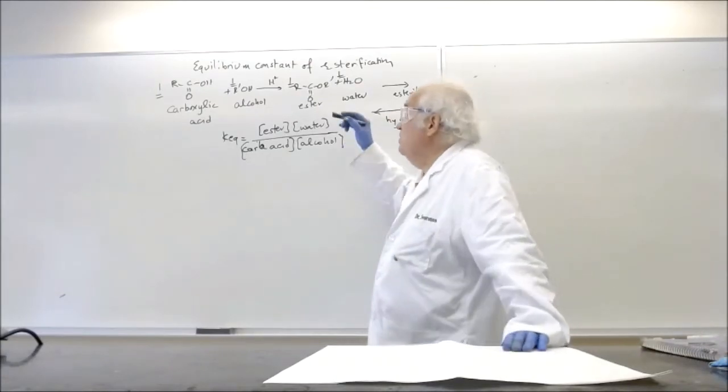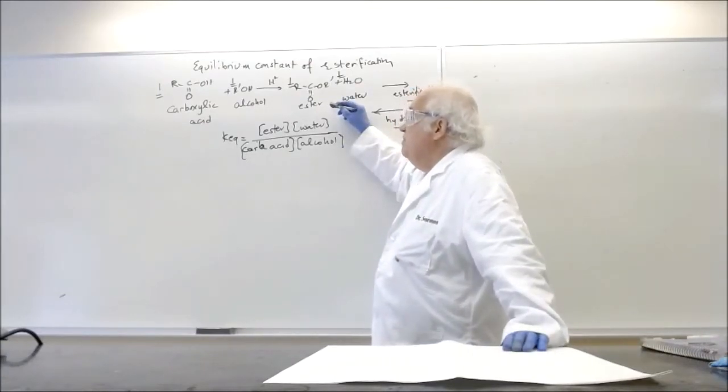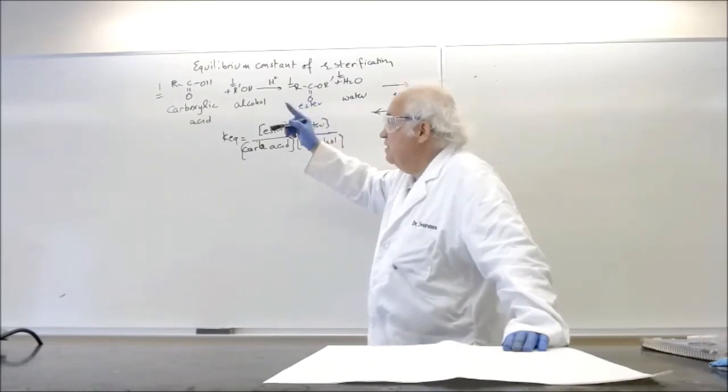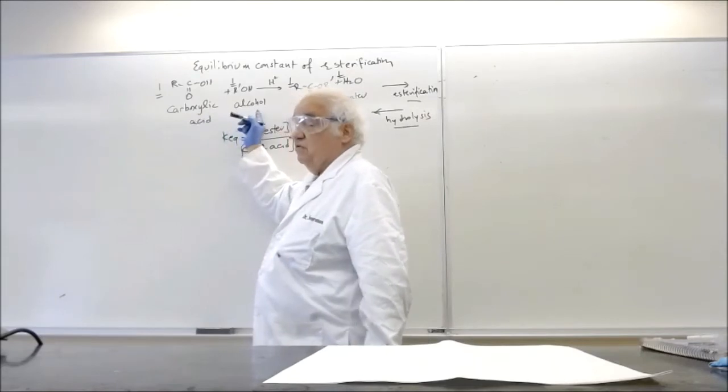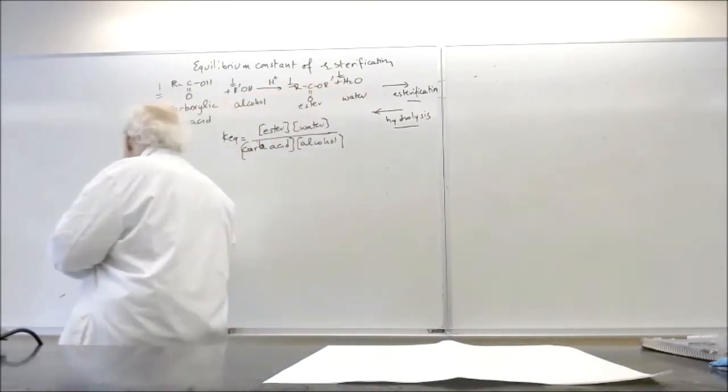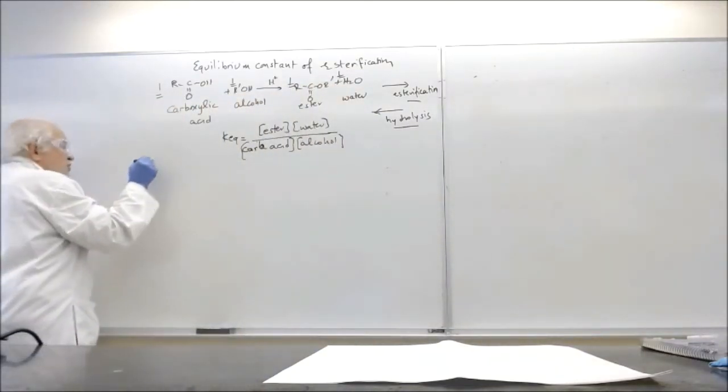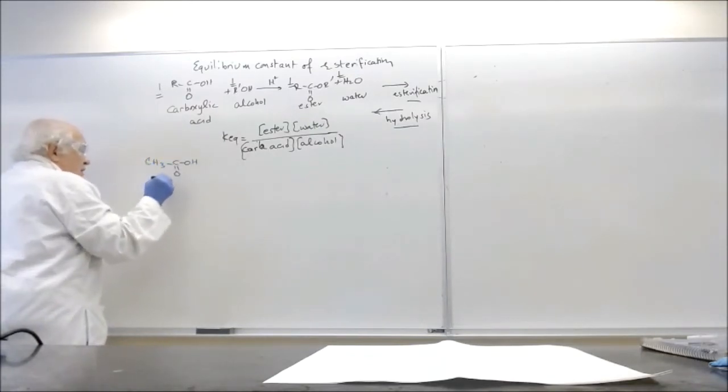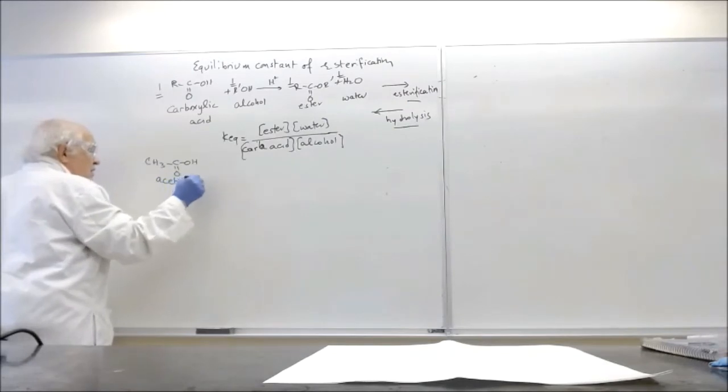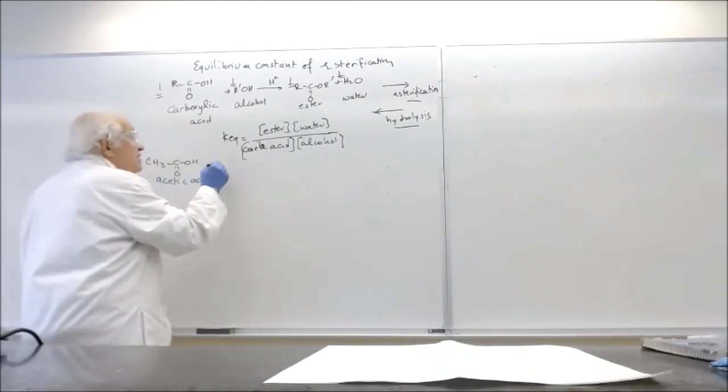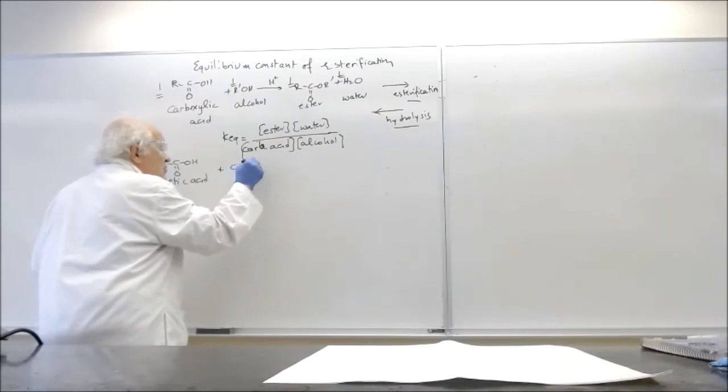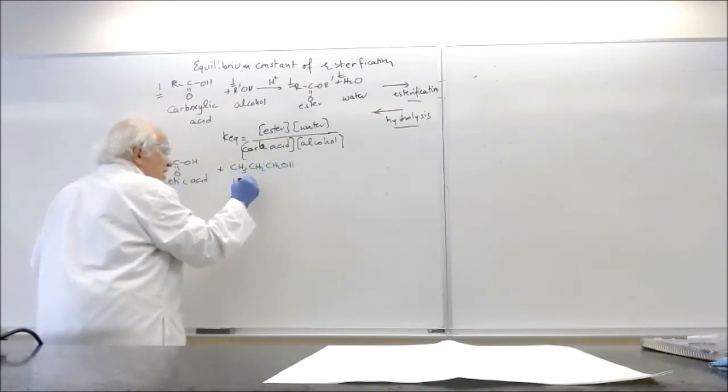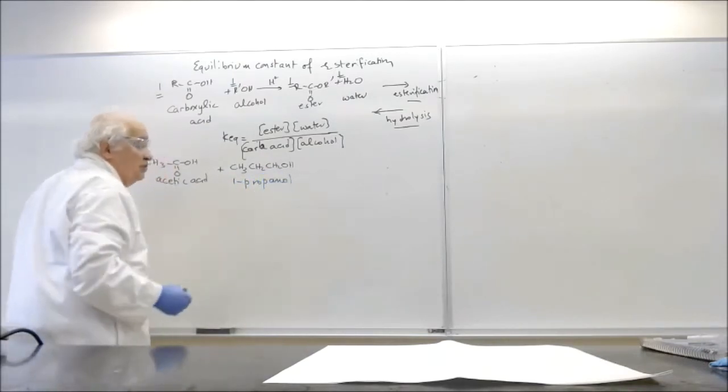All right. So what we're going to do now is the following. We will use basically one mole or equal moles of carboxylic acid and an alcohol. The acid we're going to be using is acetic acid. And the alcohol is going to be propanol.